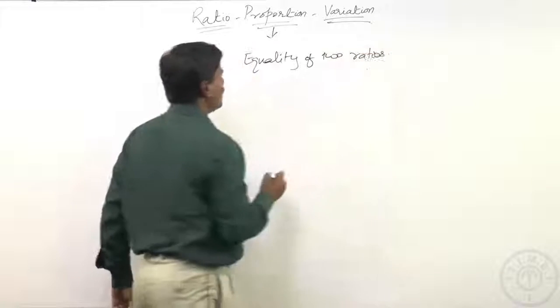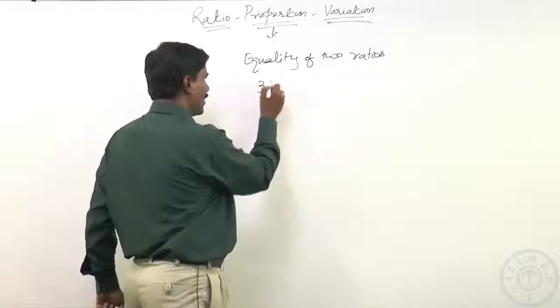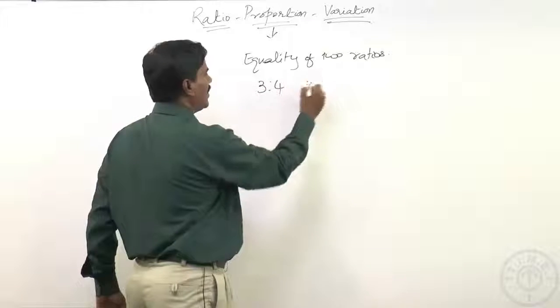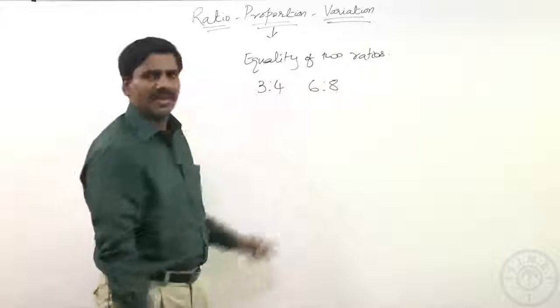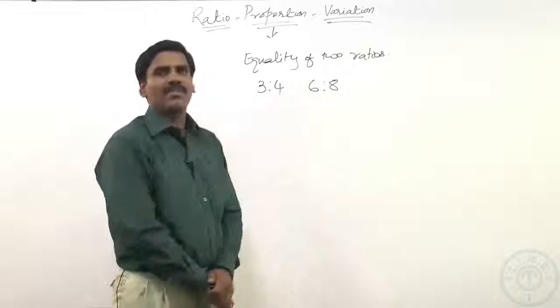Suppose if you are having something like 3 is to 4, I can say 3 is to 4 is definitely same as 6 is to 8, because 6 is to 8 if you are simplifying, we will be getting again 3 is to 4.